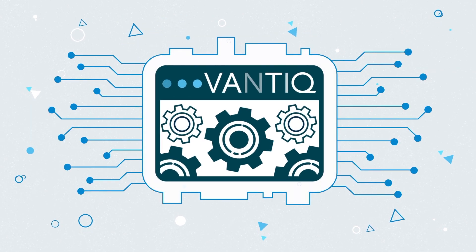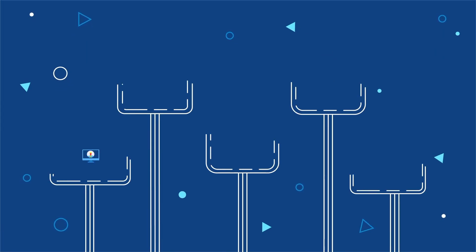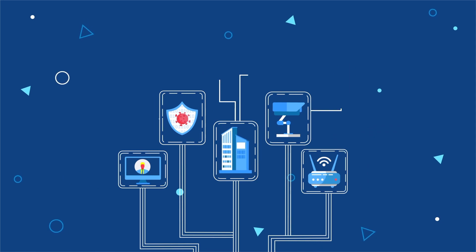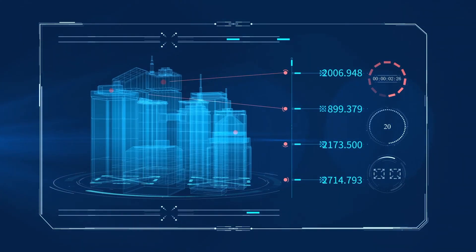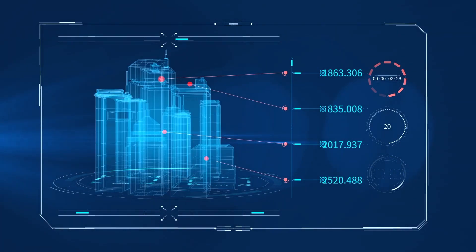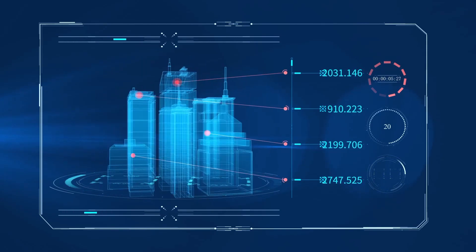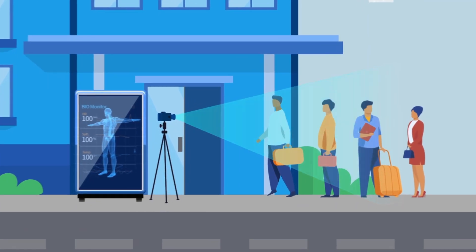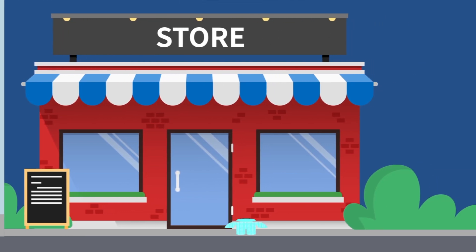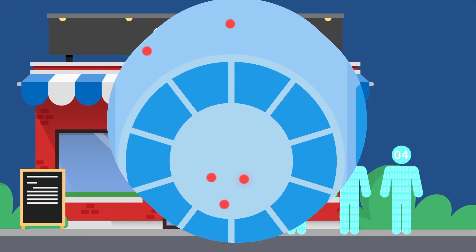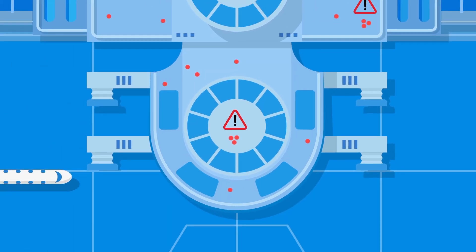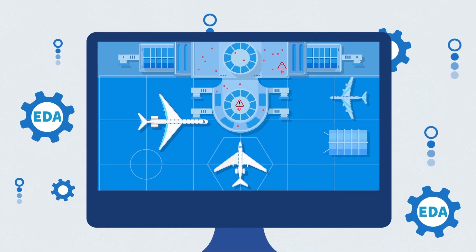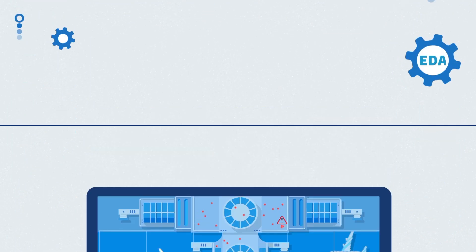Vantic combines data from IoT sensors, cameras, and enterprise systems to create a real-time digital twin to monitor and operate any environment — such as thermal cameras to ensure the health of employees, virtual queuing at a store to eliminate lines, and real-time crowd density and distance monitoring at an airport to ensure passenger safety and operational awareness.